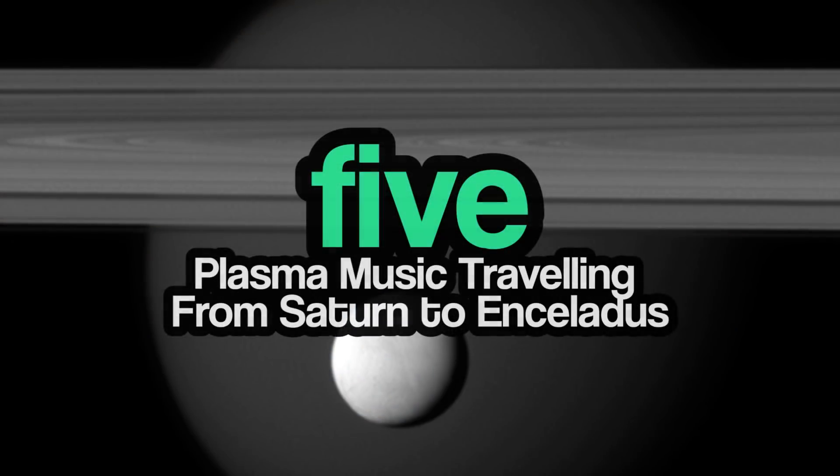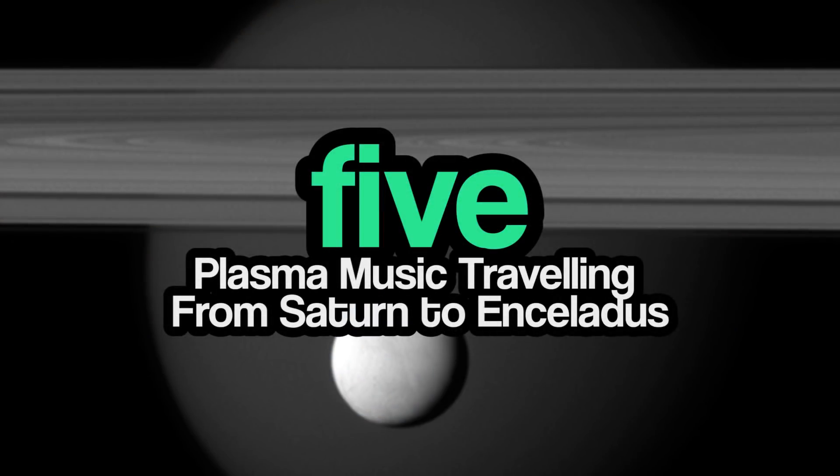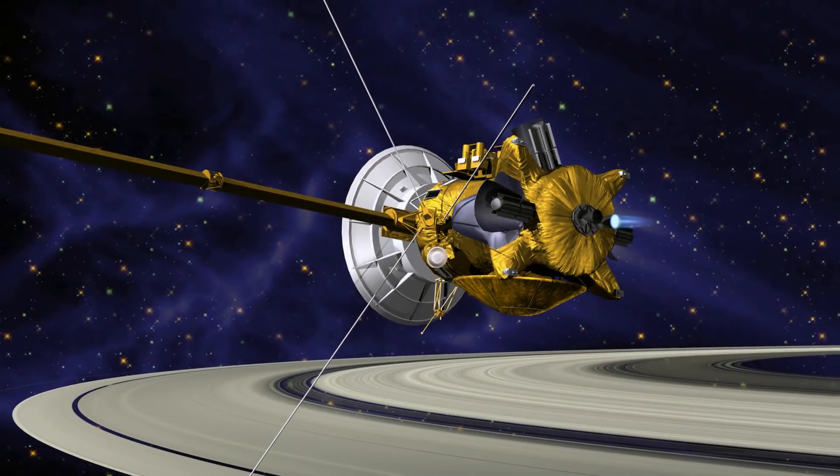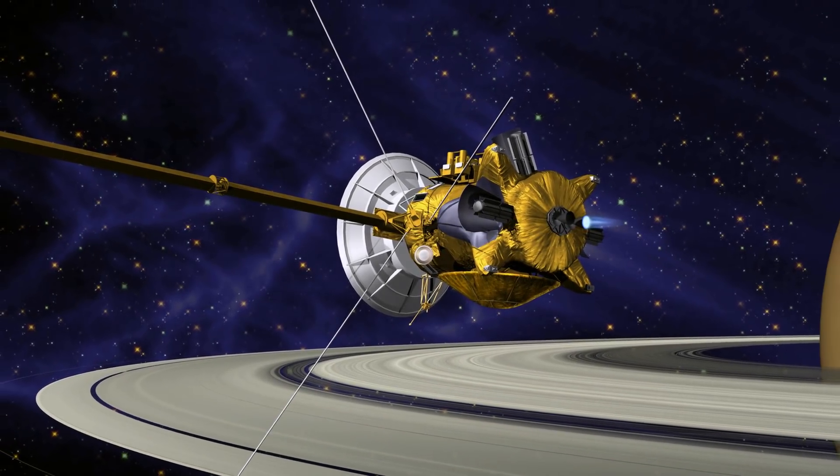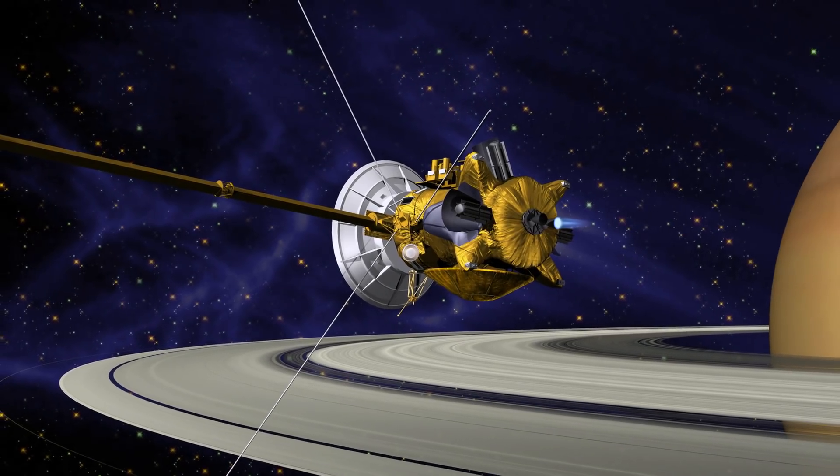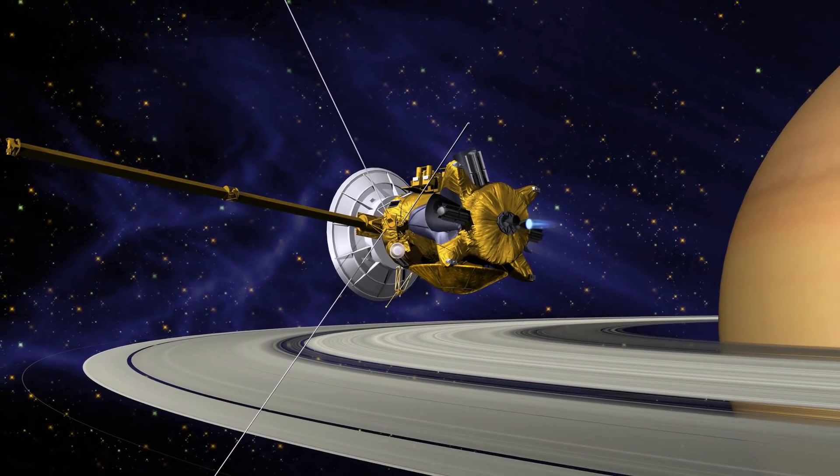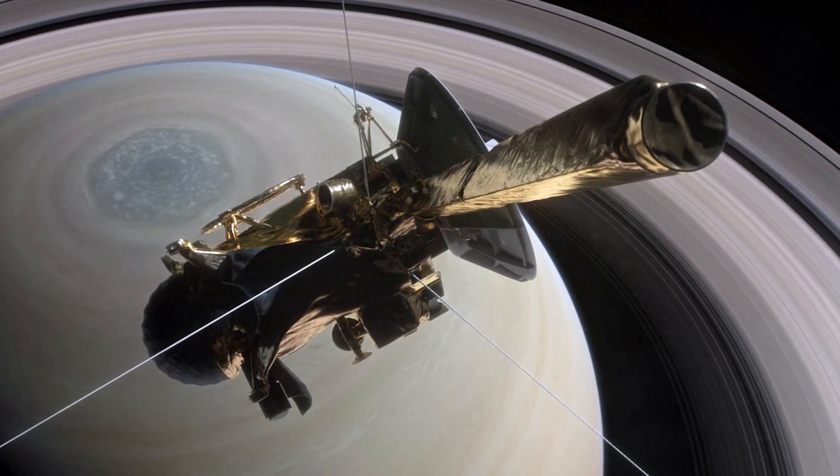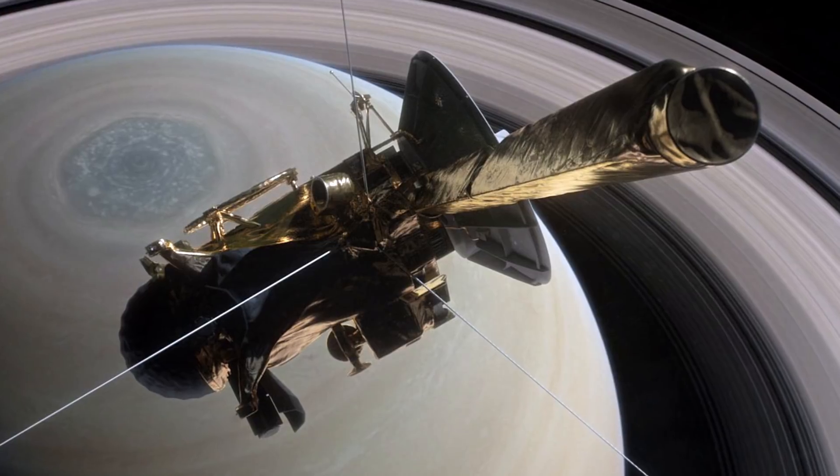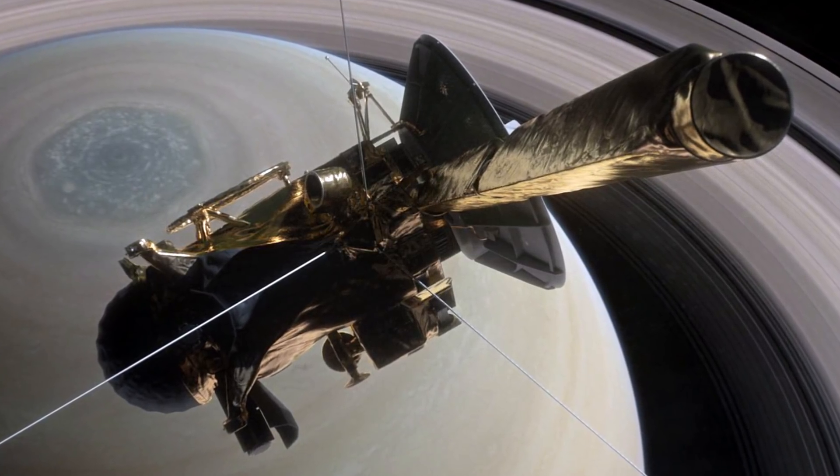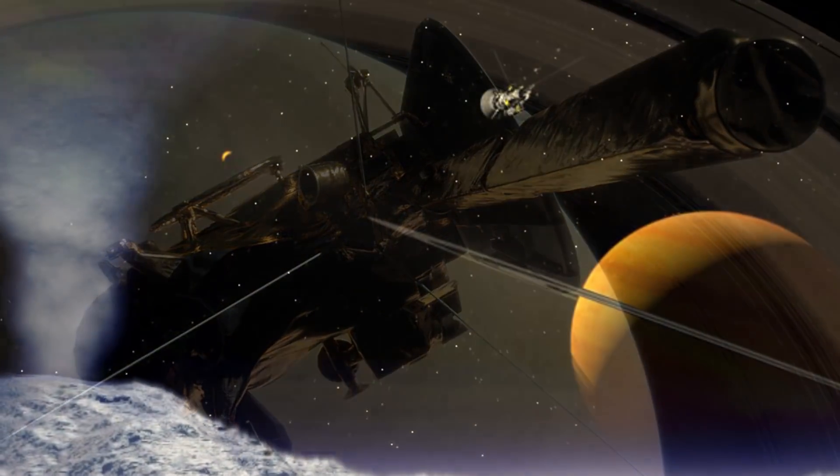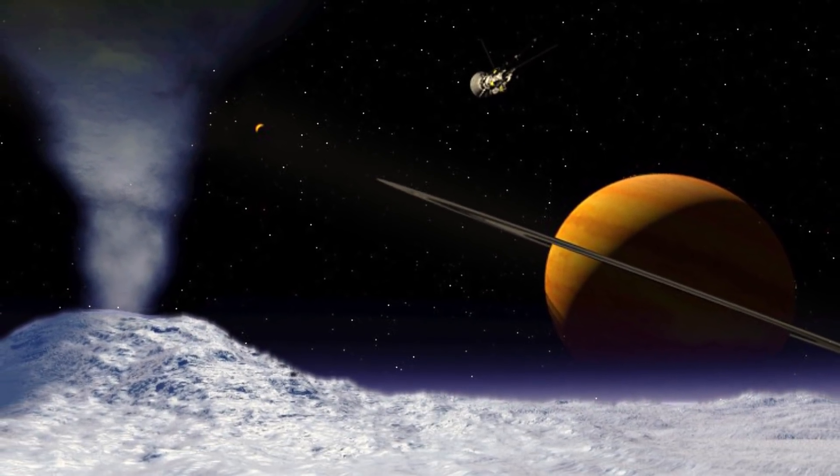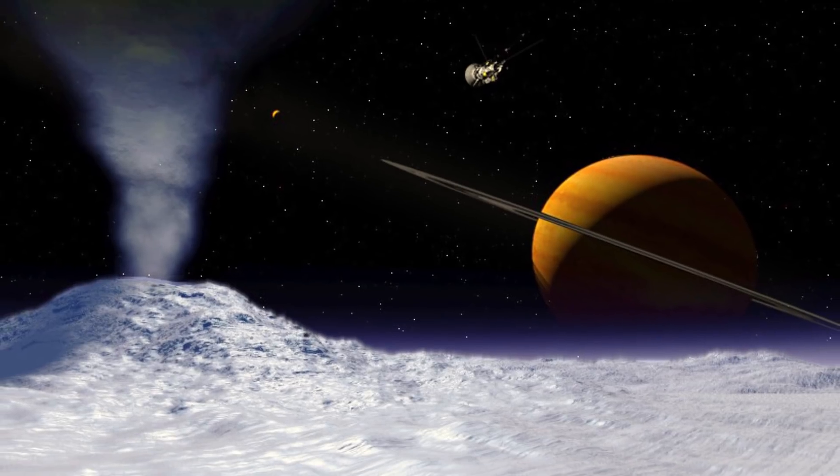Number five, the plasma music traveling from Saturn to Enceladus. As some of you may remember, Cassini was a probe that was sent by NASA, the ESA, and the Italian Space Agency to Saturn to learn more about the planet and its system. Just two weeks before Cassini purposefully dove into Saturn's atmosphere to its death, it captured some fascinating information almost as a grand finale to its legacy. The information was in the form of plasma oscillations traveling back and forth between Saturn and its sixth largest moon, Enceladus.